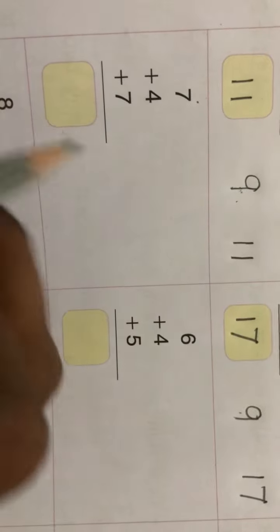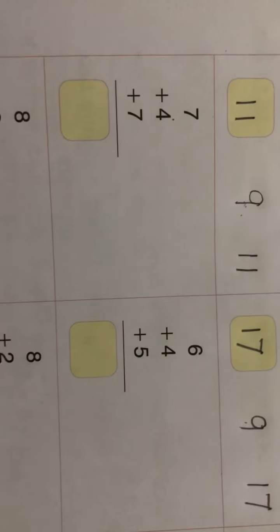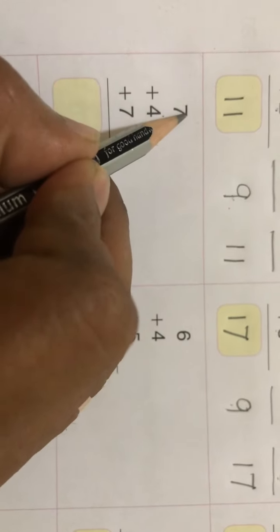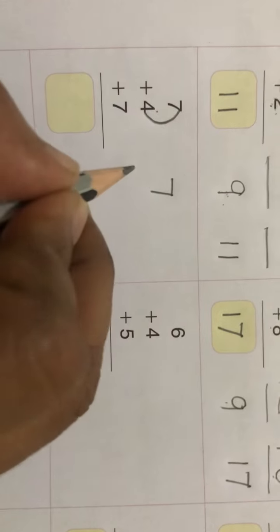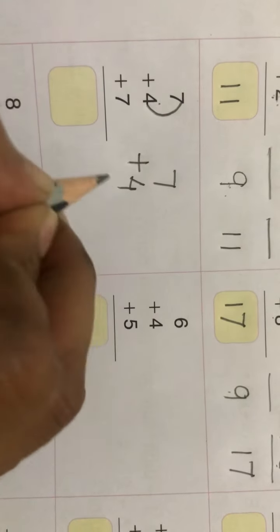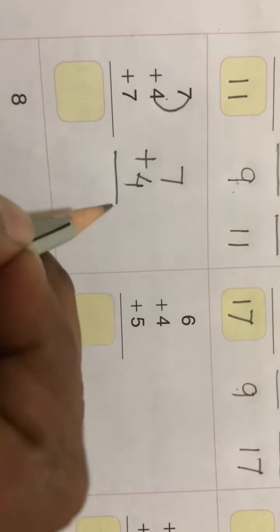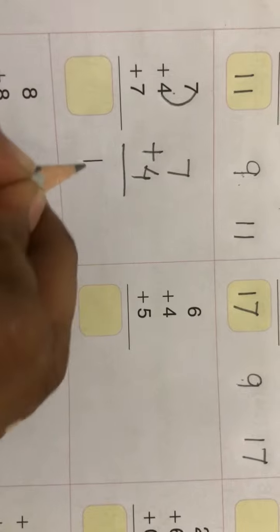Right, okay. Now similarly you can do the 4th. Add first two. So 7 plus 4 you will do first. 7 plus 4, okay, means 7, then 4 numbers ahead: 8, 9, 10, and 11. So 11 will be your sum. 11, write it here.